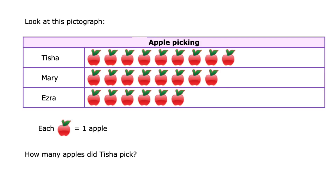This graph is about apple picking. Each apple represents one apple that a person picked. The question is: how many apples did Tisha pick? Go to the row labeled Tisha and count those apples. If you thought Tisha picked nine apples, that is right.